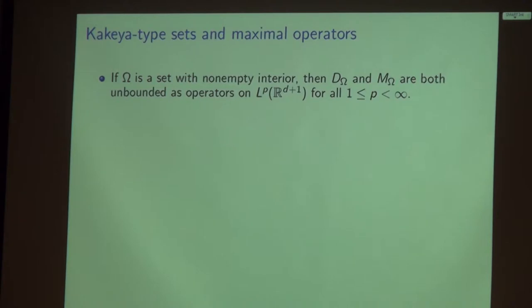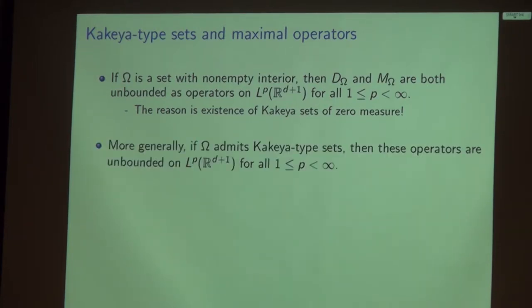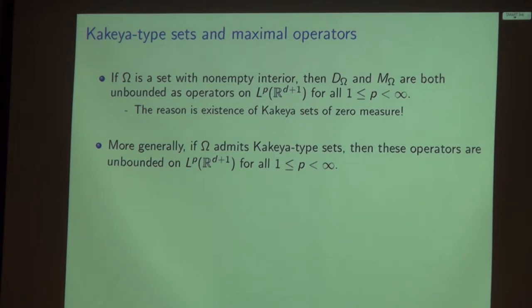Consider the granddaddy of all direction sets: omega equals the unit sphere S^d. It is a consequence of the existence of Kakeya-type sets that D_ω and M_ω, when omega is S^d, are unbounded on every non-trivial Lebesgue space, the reason being the existence of Kakeya sets of measure zero. More generally, any direction set omega that admits Kakeya-type sets — in our sense — will automatically give rise to unbounded directional and maximal operators, unbounded on every Lebesgue space except L^∞.